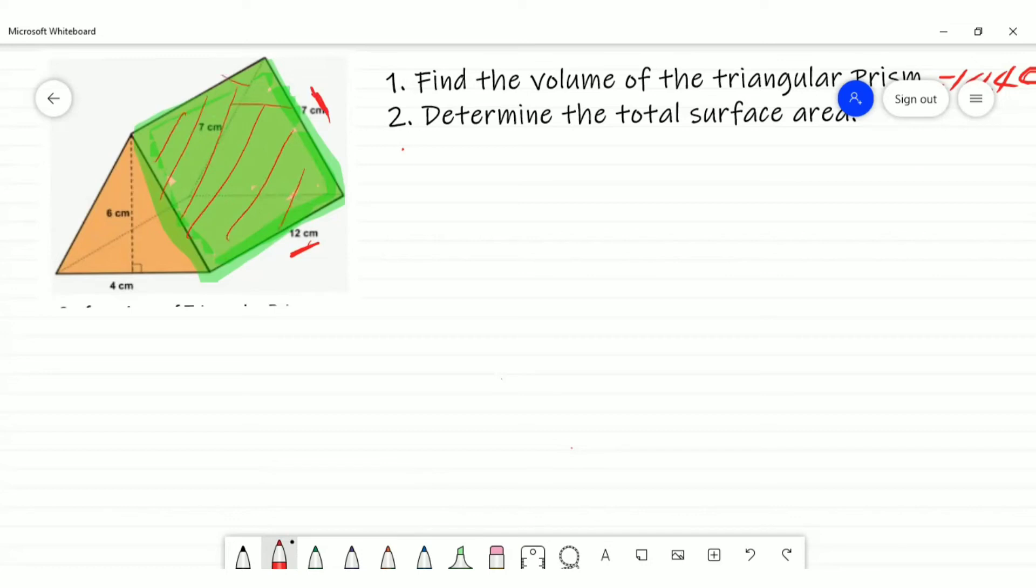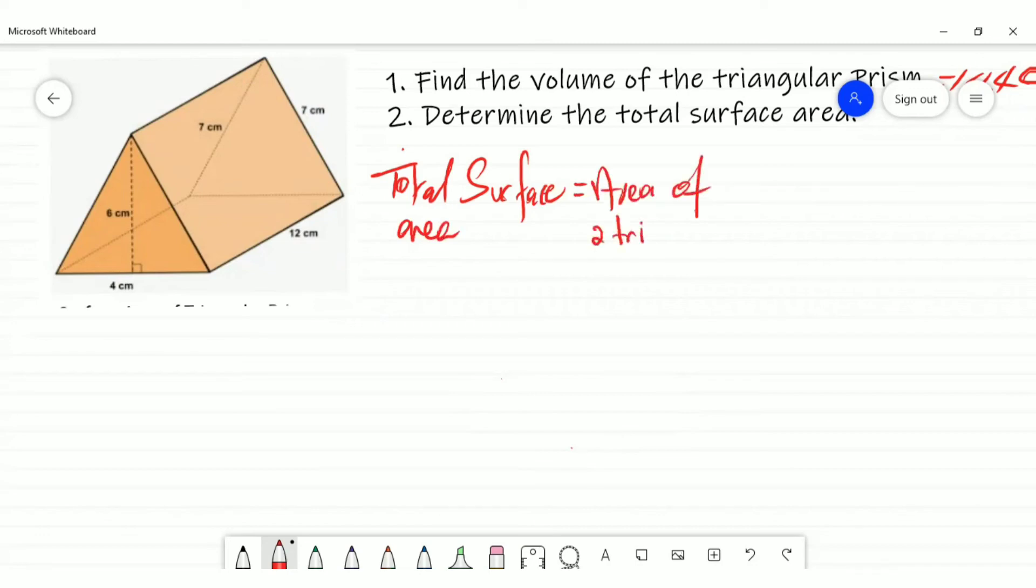This is the 12, this is the 7, and we'll get the area of this. I'm shading it, putting a little red on it. So we want to put together those two triangles and three rectangles to find the total surface area. The total surface area is equal to the area of two triangles plus the area of three rectangles.